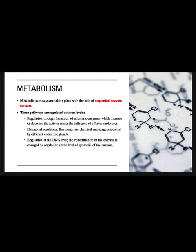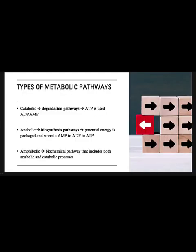There are three basic types of metabolic pathways: catabolic reactions, anabolic reactions, and amphibolic reactions. Catabolic means to break down — it is a degradation pathway. For example, ATP being broken down into ADP; if exercise continues very intensely, ADP gets broken down into AMP, which is adenosine monophosphate. These catabolic reactions are regulated through enzymes and hormones that tell the body to break things down.